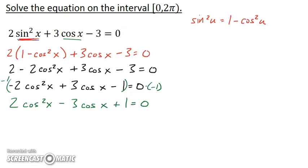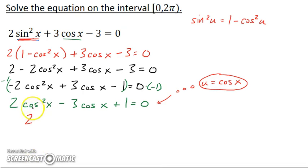Now, whether you actually go through with writing this step out or looking for it, here I want you to think of letting some variable u be cosine of x. Because if I were to do that, I could rewrite this as 2, cosine of x is u. This would be u squared. 2u squared minus 3 times cosine of x, that's u, plus 1 equals 0.